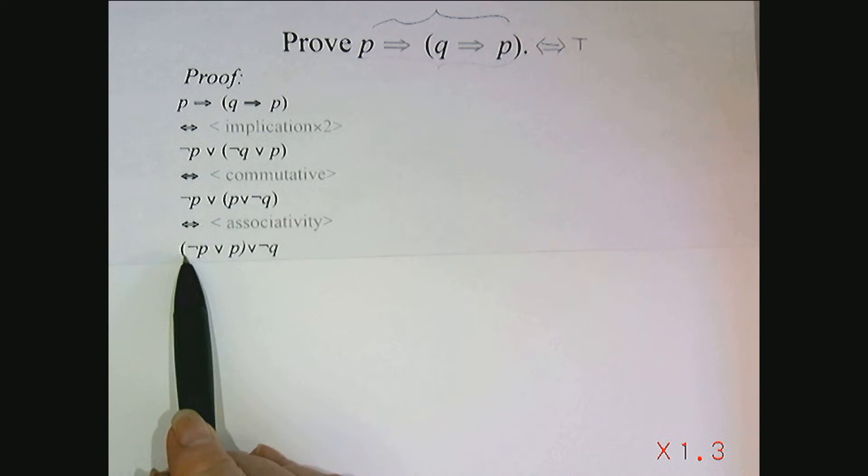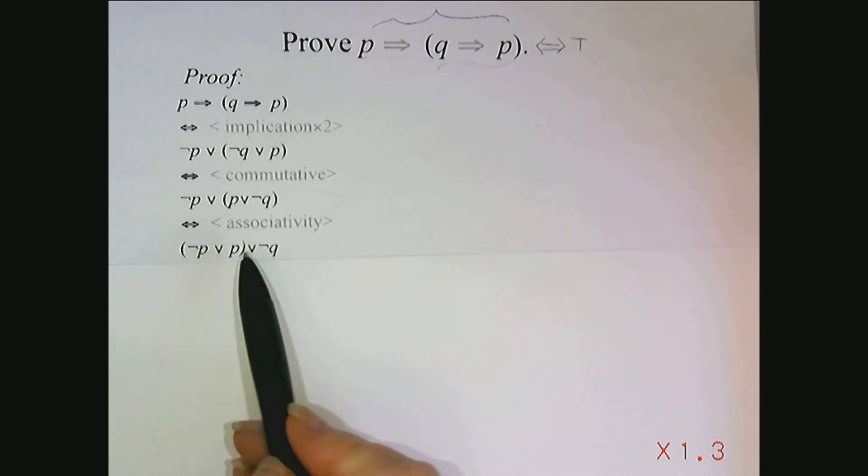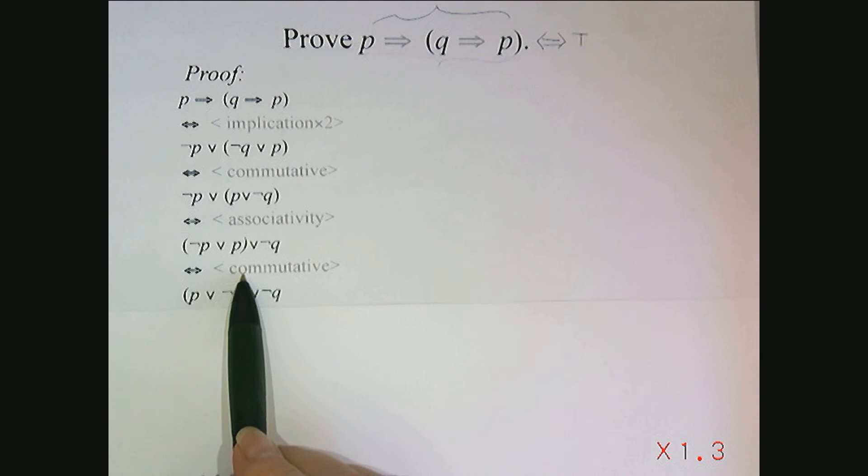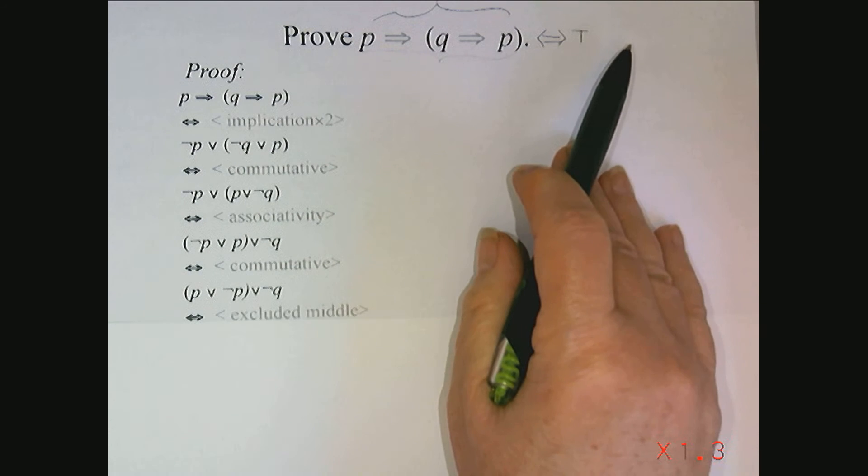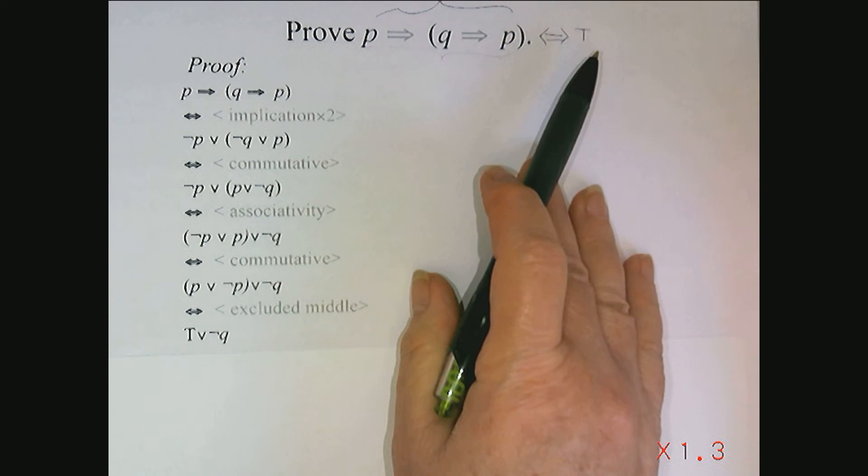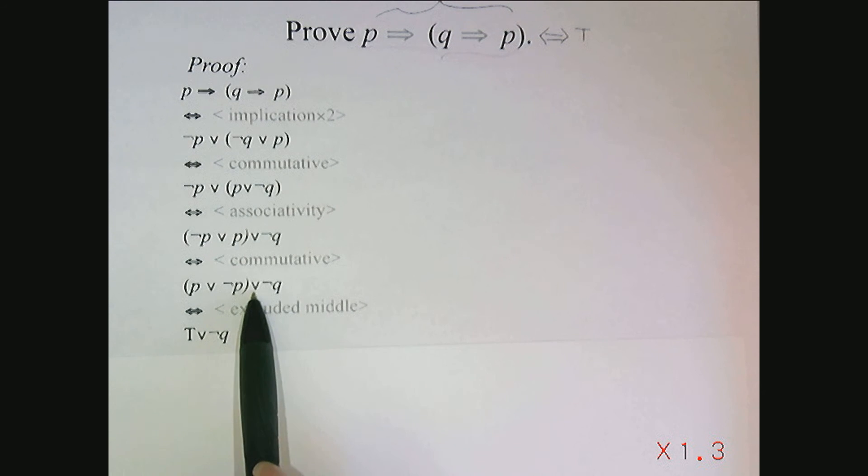Now I know that P or not P by excluded middle is true, but I don't have things in that form. But I could rearrange and write this as P or not P by the commutative property. And then I have things in the form of excluded middle, and I could say this is true. So this is equivalent to true or not Q, some expression.